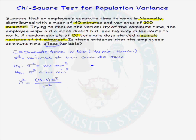What is n in our problem? There were 20 in our sample, so n is 20. S squared, our sample variance, is 64 minutes squared, and sigma squared is 100 minutes squared. So we have 19 times 64 divided by 100 is equal to 12.16. That is our chi-squared test statistic value.